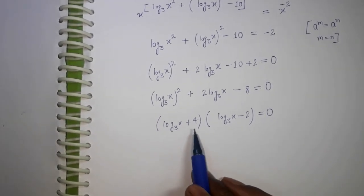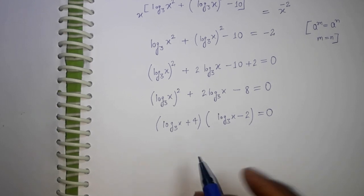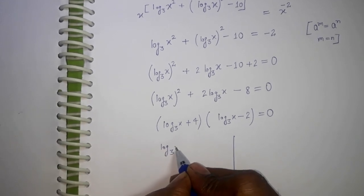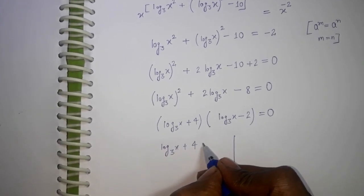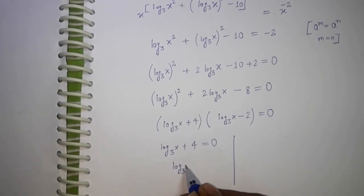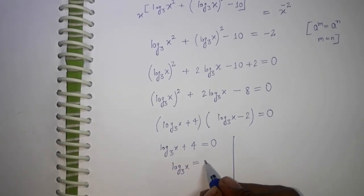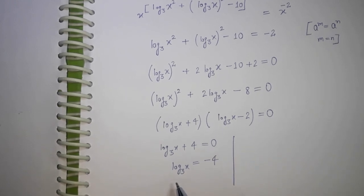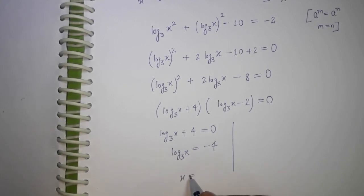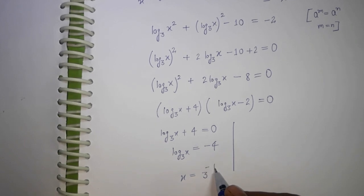So either this will be 0 or this will be 0. So here we have x equal to 3 to the power -4.